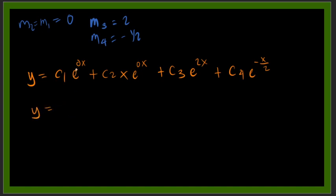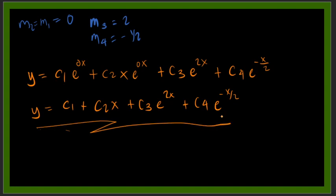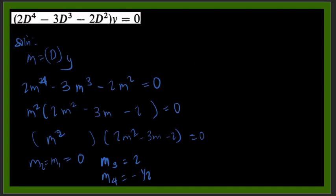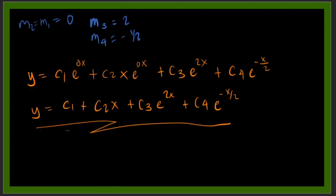So we can simplify that one as e to the power of 0 will be equal to 1. So we have C1 plus C2 x plus C3 e to the 2x plus C4 e to negative x over 2. And this is now our general solution for this higher order differential equation. So I hope you learned something in this video. Thank you for watching and as always, enjoy learning.